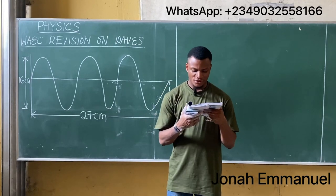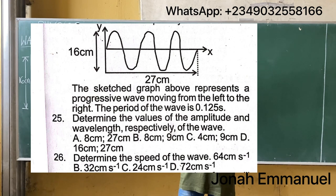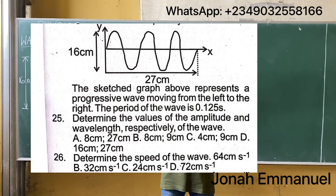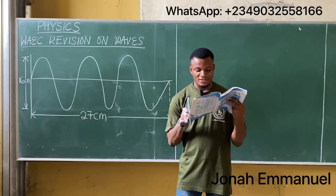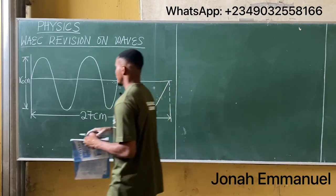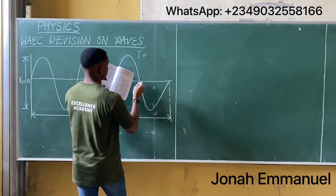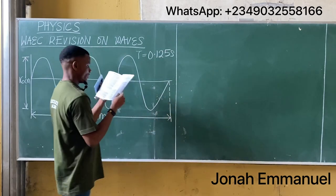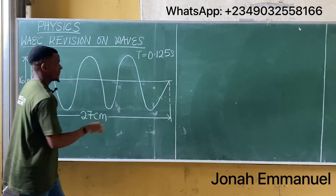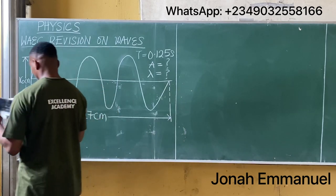Let's take another example on waves. This question presents a sketch graph of a progressive wave moving from left to right. The period is 0.125 seconds. We need to determine the amplitude and wavelength of the wave, and then the speed of the wave.